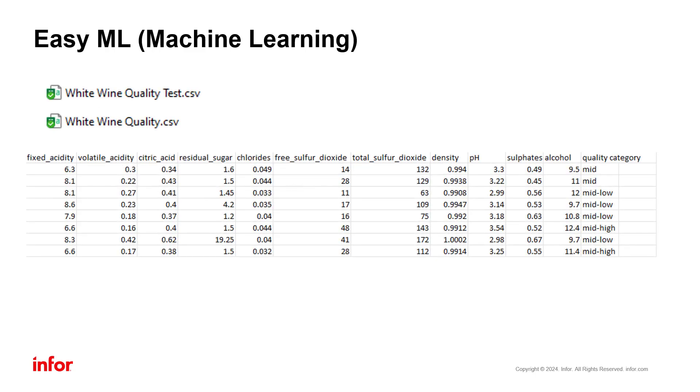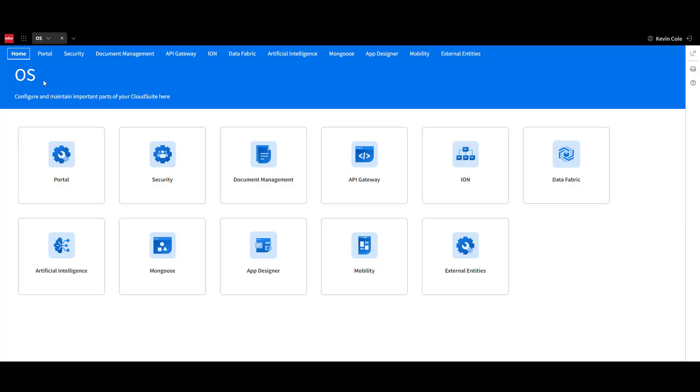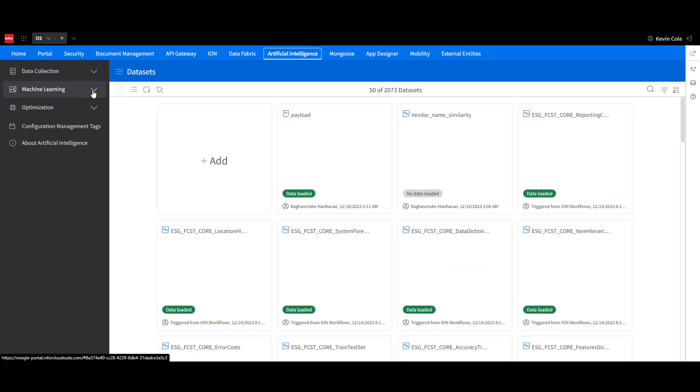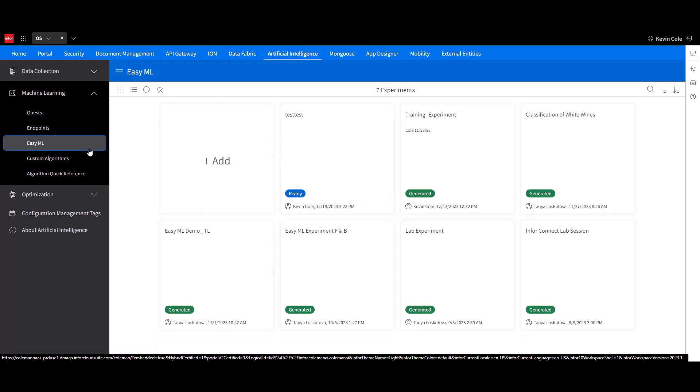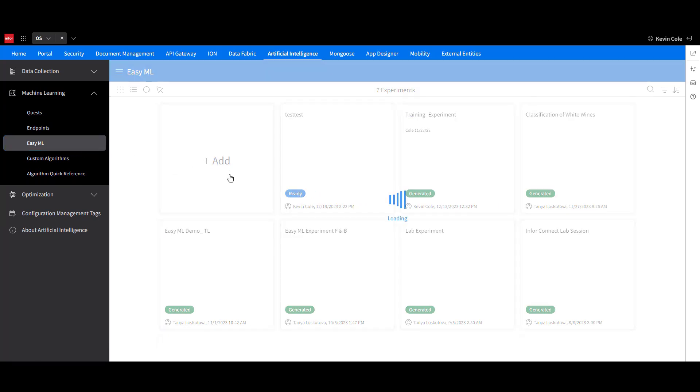I'll be using two data sets here, one with some historical data to be trained on, and one to test the model performance. First, let's navigate to the Artificial Intelligence section of InforOS and find EasyML under the Machine Learning drop-down. I'll create a new EasyML model using the Add tile.